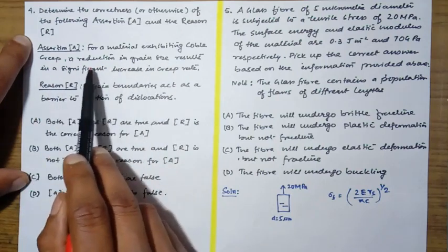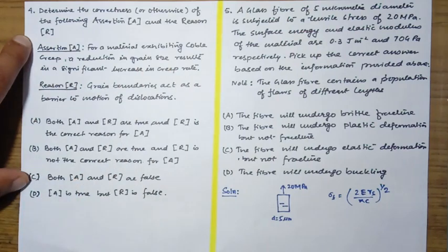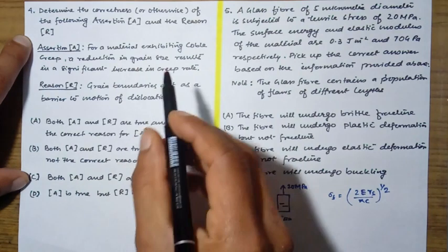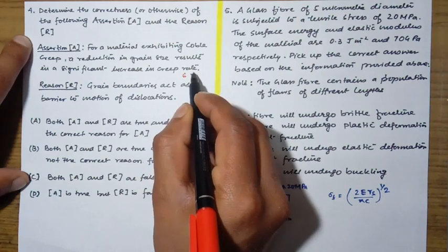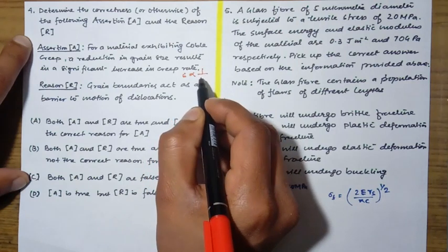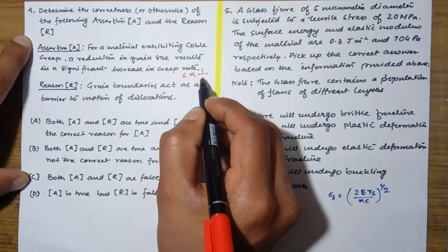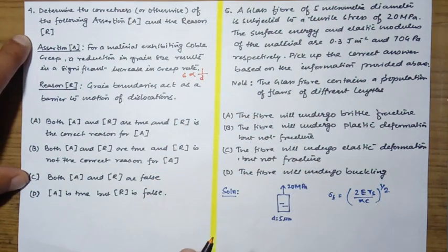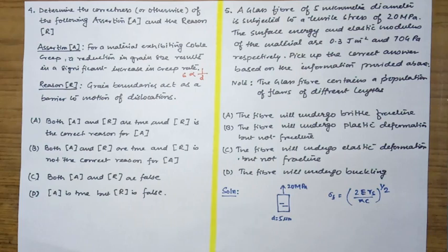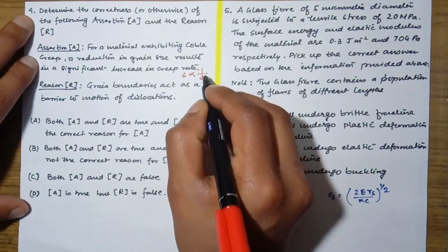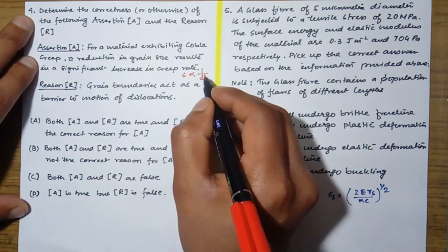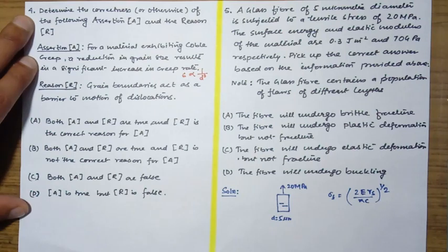The assertion is: for a material exhibiting cobalt creep, a reduction in grain size results in a significant increase in creep rate. In cobalt creep, since it takes place at lower temperature, we know the expression for the strain rate that is inversely proportional to the diameter of the grain. This follows the equation with d to the power of 3, so strain rate increases.